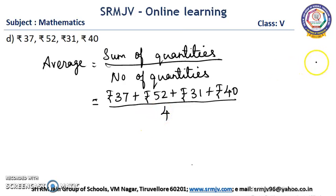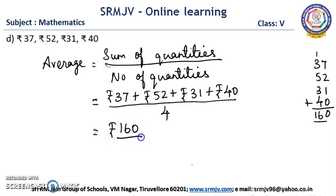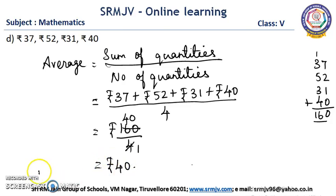Now we are going to add the amounts: 37, 52, 31, 40. So: 1 plus 2 is 3, 3 plus 7 is 10 — 0 here with 1 carry over. 1 plus 3 is 4, 4 plus 5 is 9, 9 plus 3 is 12, 12 plus 4 is 16. So the sum of quantities is rupees 160, divided by 4. In the 4 table, 4 times 16, then we add the 0 — that is rupees 40. Average is equal to rupees 40.